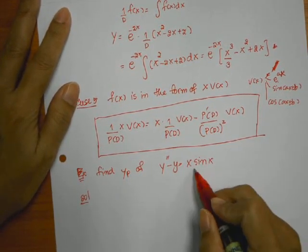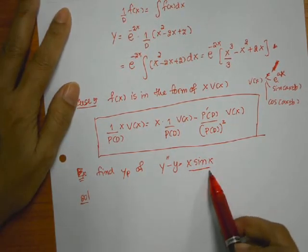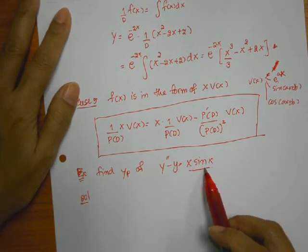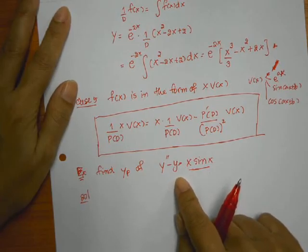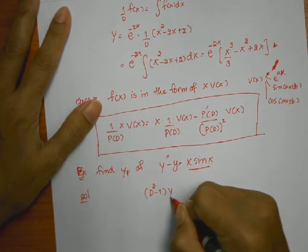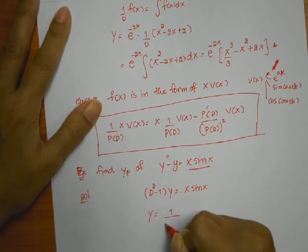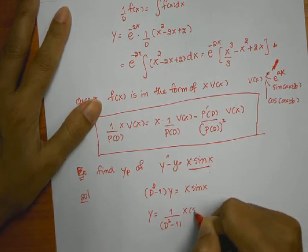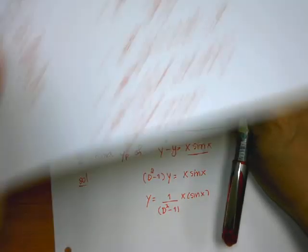Now, if you look at the function here, it is case 5 where v(x) equals sine x. So in order to find yp here, you've got to write this differential equation in the term of d. We've got d squared minus 1. So y equals 1 over p(dx), which is d squared minus 1, times x sine x. Now we are going to use this formula to find the solution.